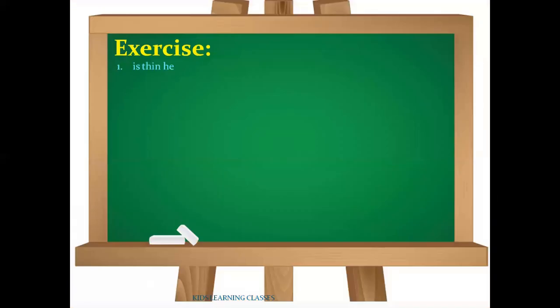Here is some easy task for kids. First is the example of 'is thin he.' The correct form of this sentence is 'He is thin.' Second is 'car I have a.' The correct form is 'I have a car.' Third: 'like I banana.' The correct form of the sentence is 'I like banana.'